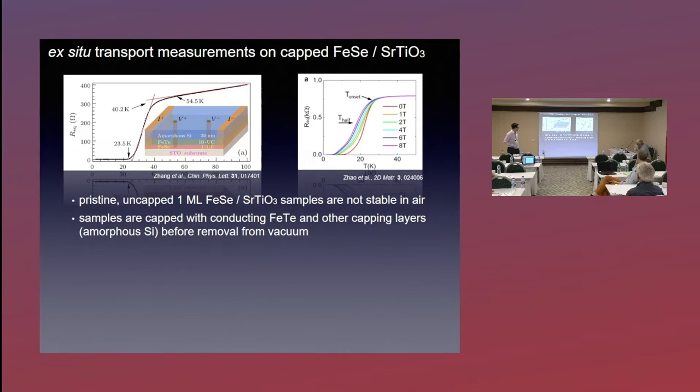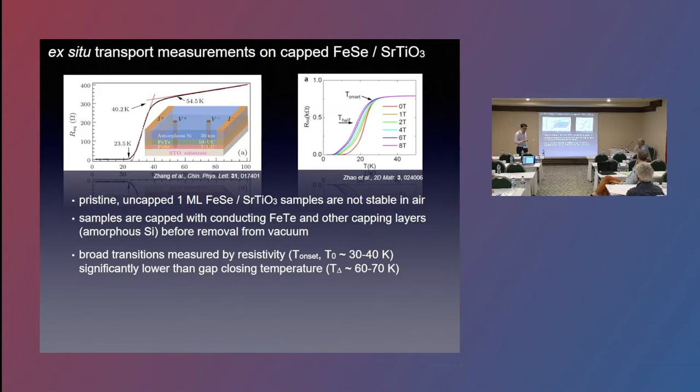It's around 40 Kelvin here, maybe closer to 20 Kelvin here. So they're very broad transitions. They're substantially lower than what's measured spectroscopically. And there's quite a bit of sample-to-sample variation. You can see these two samples are nominally identical, but with quite different TCs.